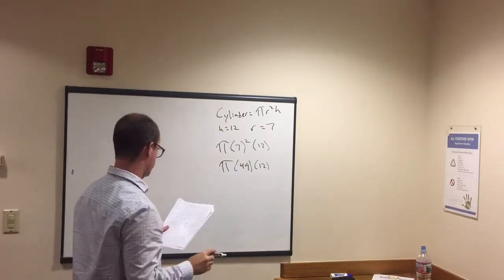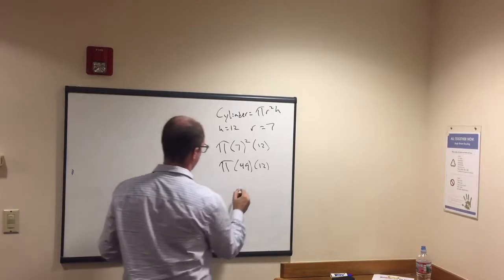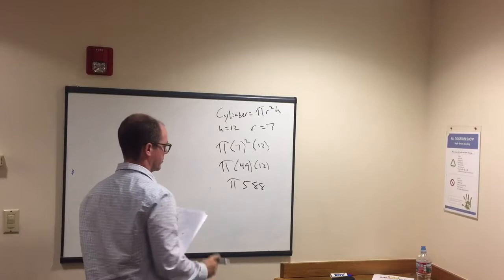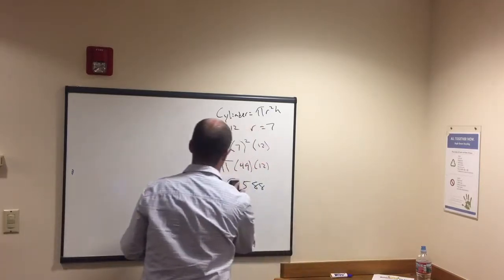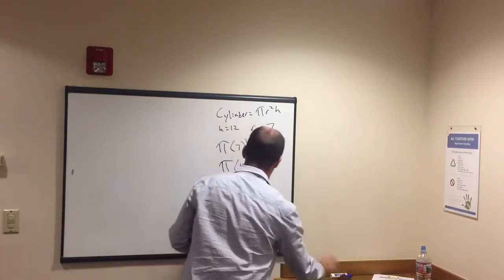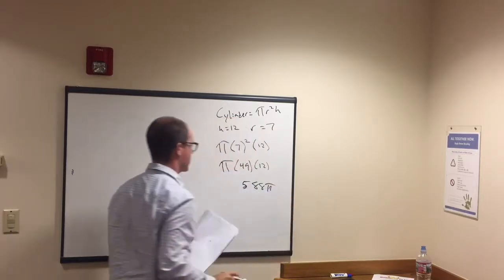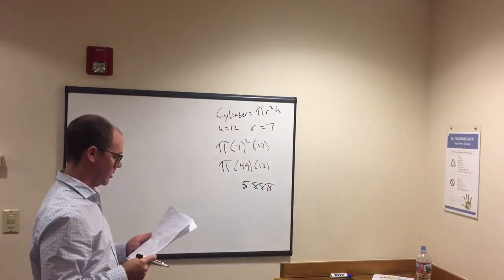What's that math? 49 times 12 is 588 times pi. Whoops, did it wrong. Pi usually goes at the end of the number. Might as well do it right. 588 pi. All right, so that's a good cylinder question.